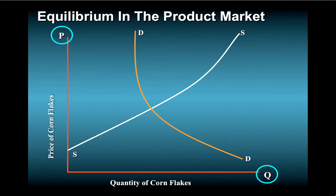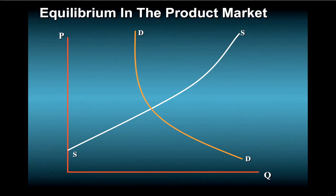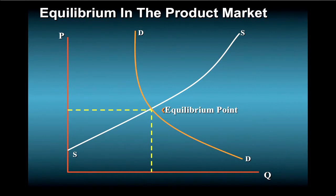Note also that the demand curve slopes downward. This reflects the idea that the lower the price, the more cornflakes the consumers will want to buy. Similarly, the supply curve slopes upward, indicating that as prices rise, businesses will be willing to provide more cornflakes. The powerful idea behind this figure is that the price in the market will tend to be set where the supply and demand curves cross.